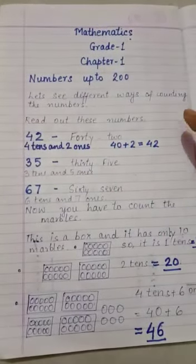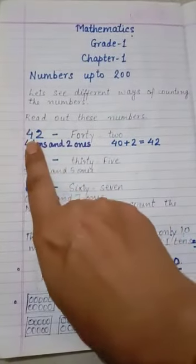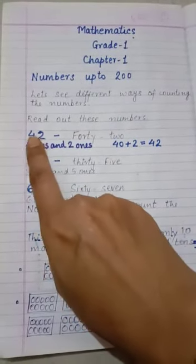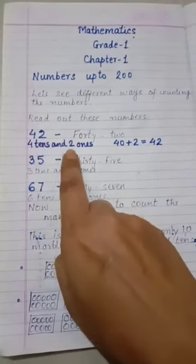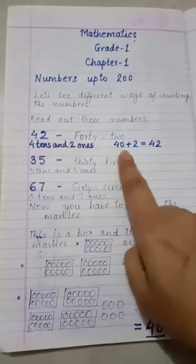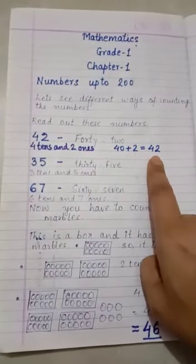Let's see different ways of counting the numbers. First, we will read out these numbers. The first number is 42. 4 at the tens place and 2 at the ones place. 4 tens means 40 and 2 ones is 2. So, 40 plus 2 is 42.